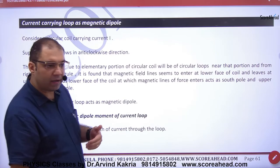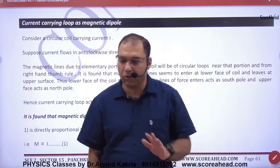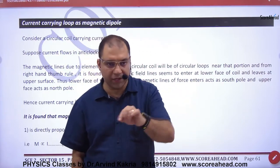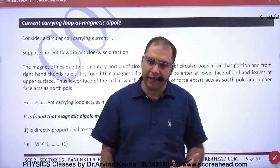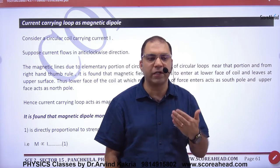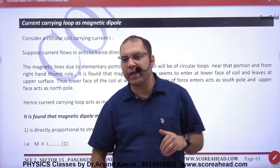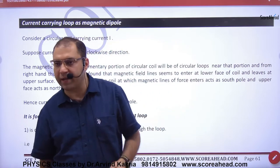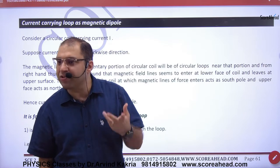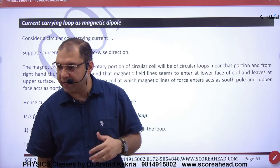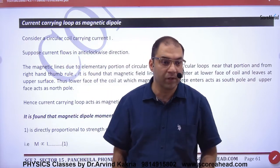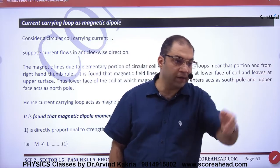Current-carrying loop as a magnetic dipole. Suppose you have a current-carrying loop — a ring with a current. A current-carrying loop generates a magnetic field B in the center. Because it generates B, it acts like a magnet. A current-carrying loop acts like a magnet.